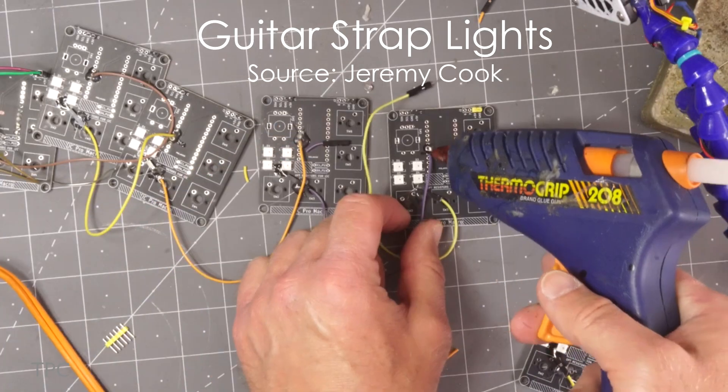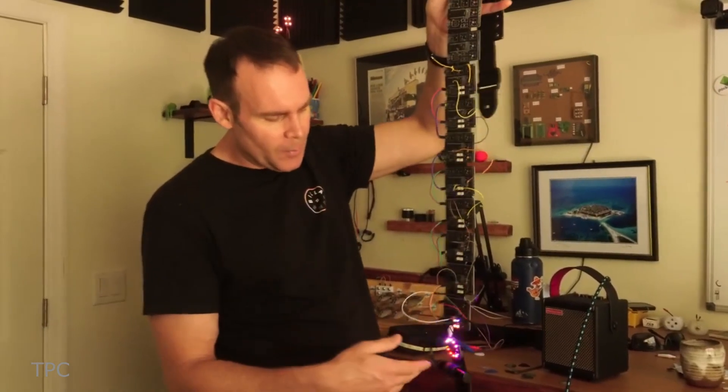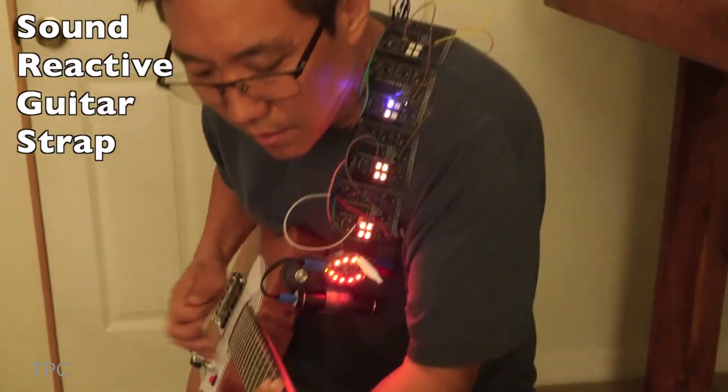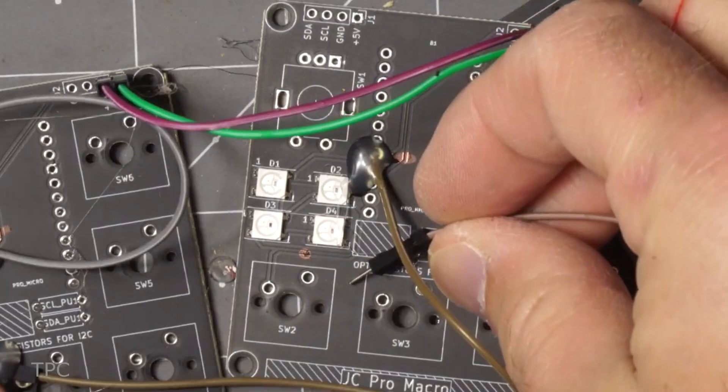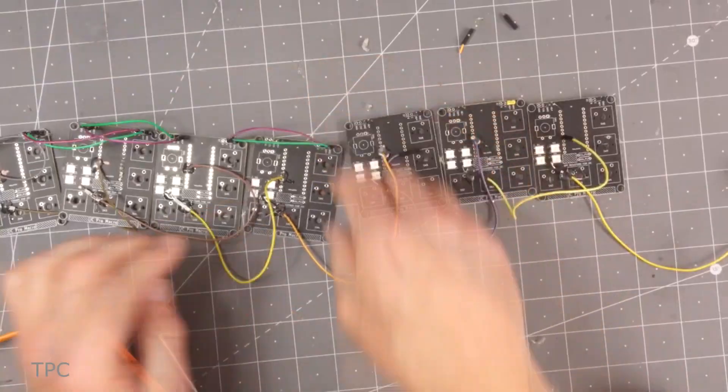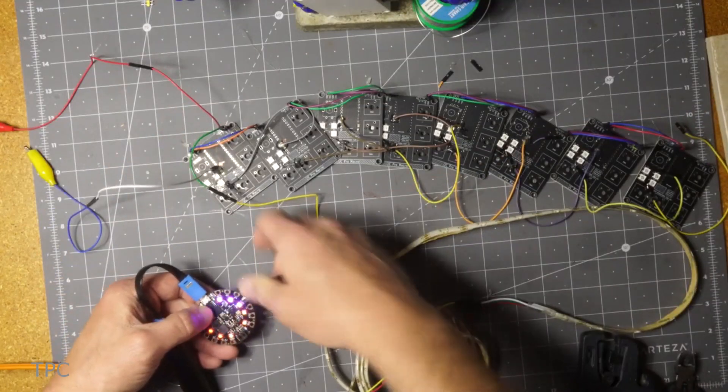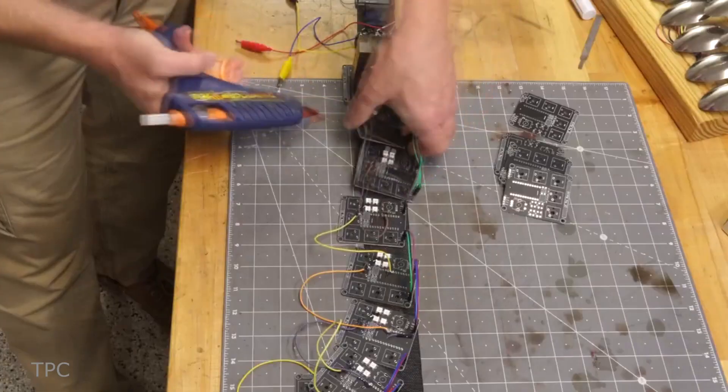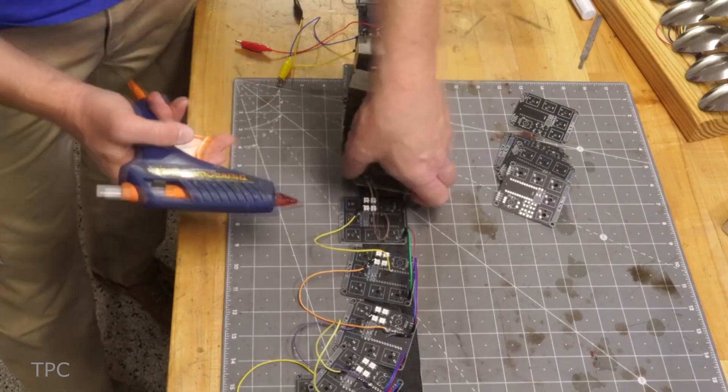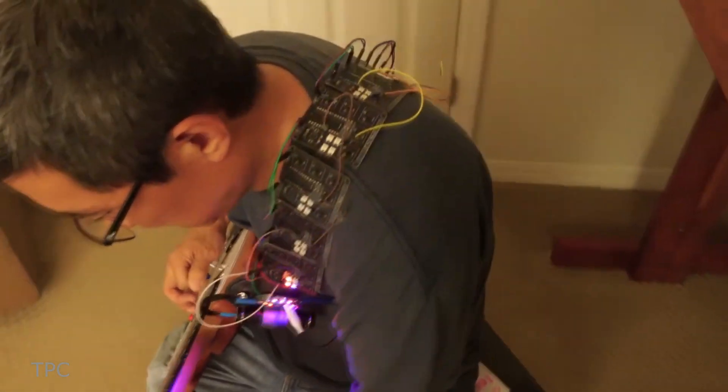Number 7. Jeremy found a creative way to repurpose PCBs from his old project by creating a guitar straplight that makes him look like a rock star. The PCBs already had NeoPixel LEDs, so he simply connected them using jumper cables to form a chain and controlled them using Adafruit's Circuit Playground Express. After soldering the connections, he glued the PCBs onto a strap to ensure they wouldn't fall off while playing the guitar.